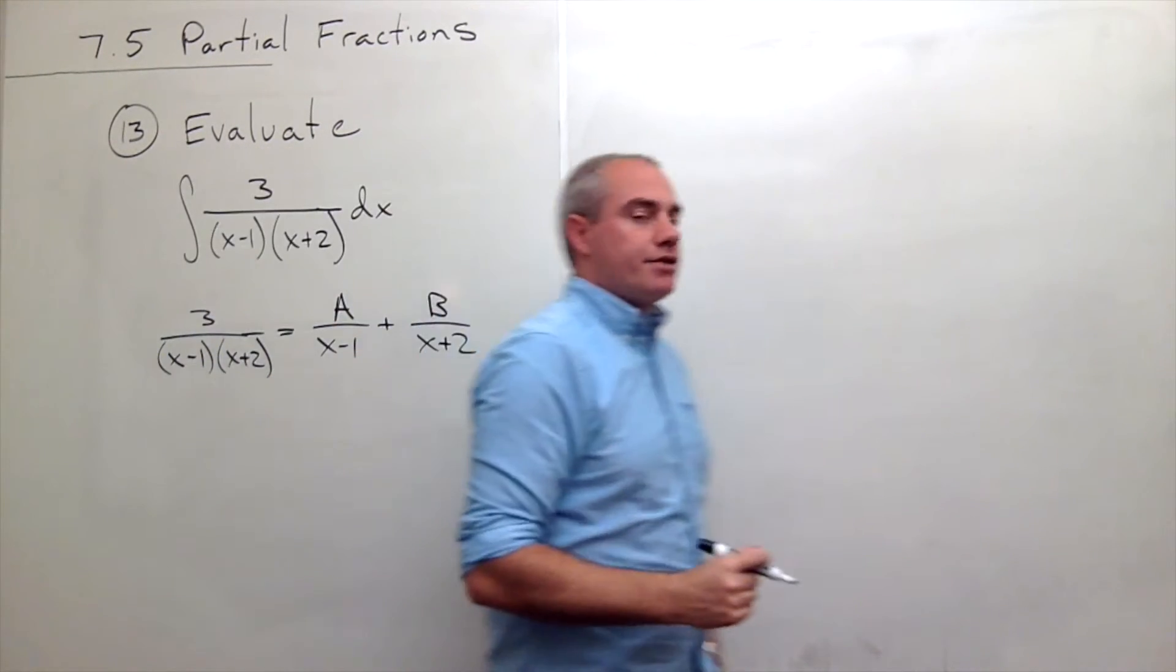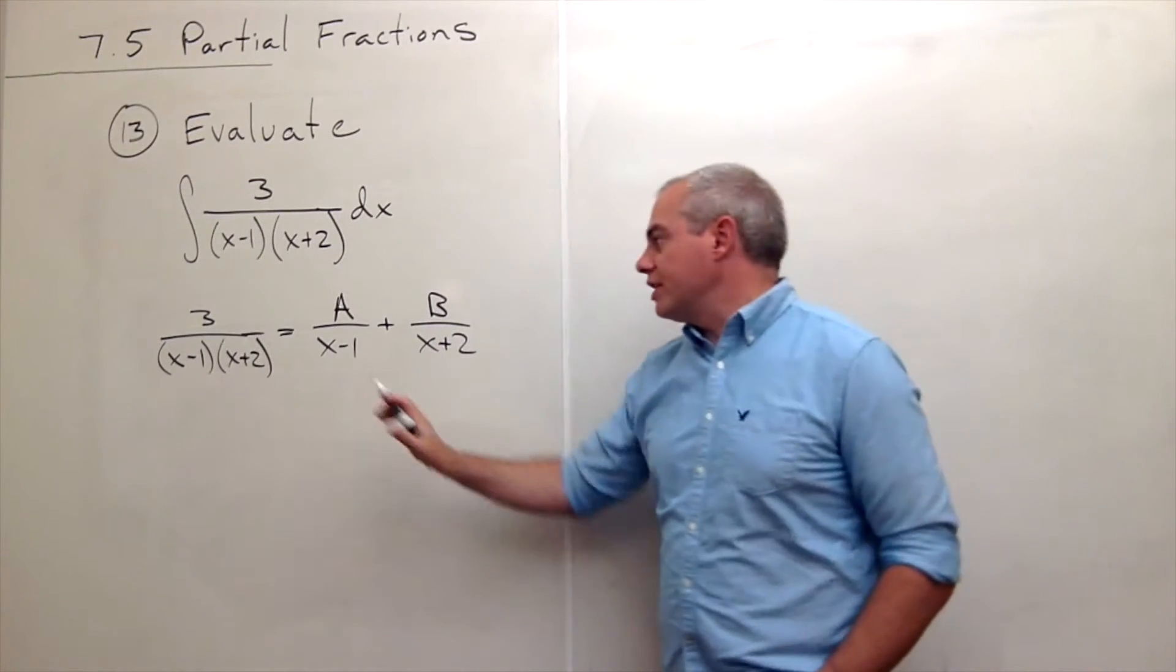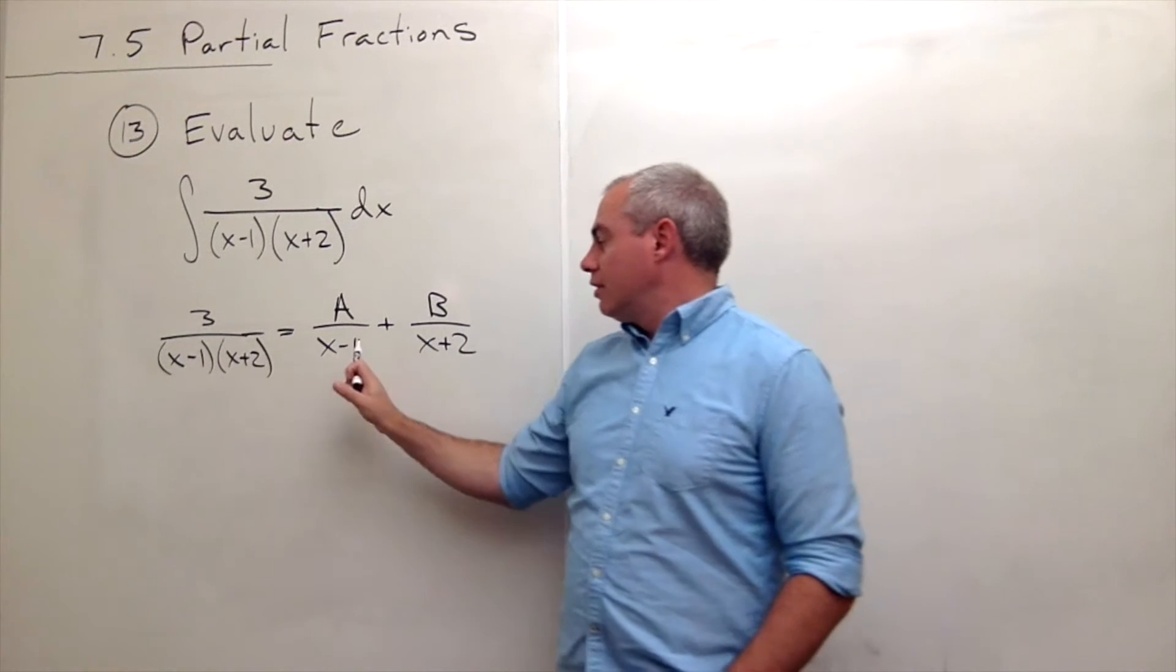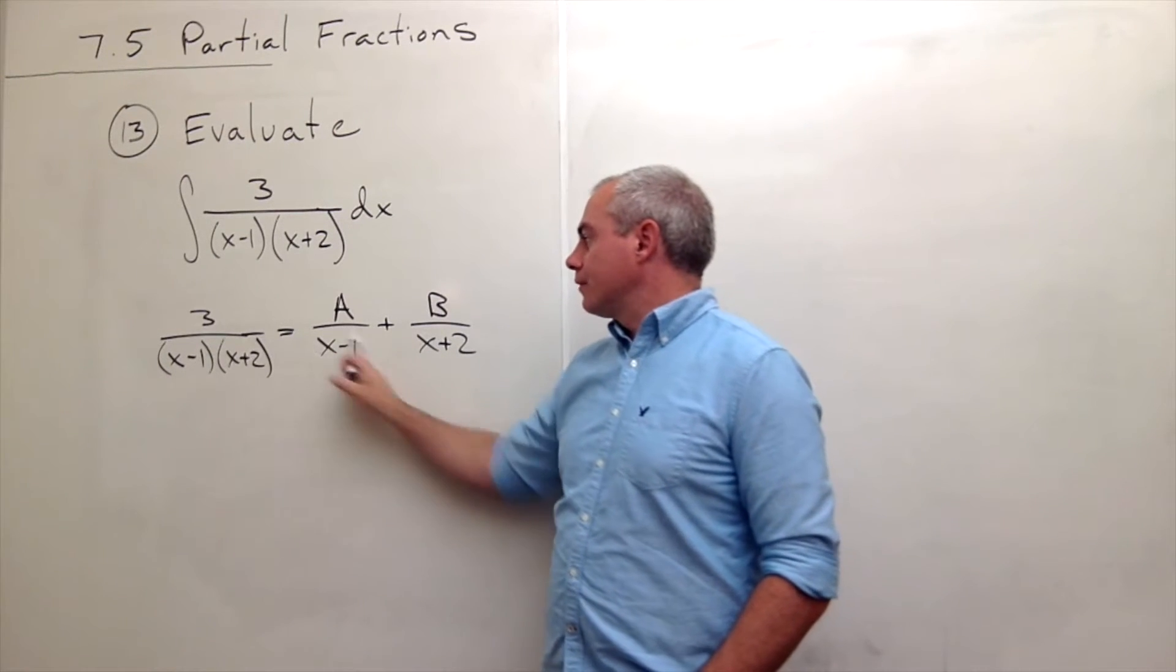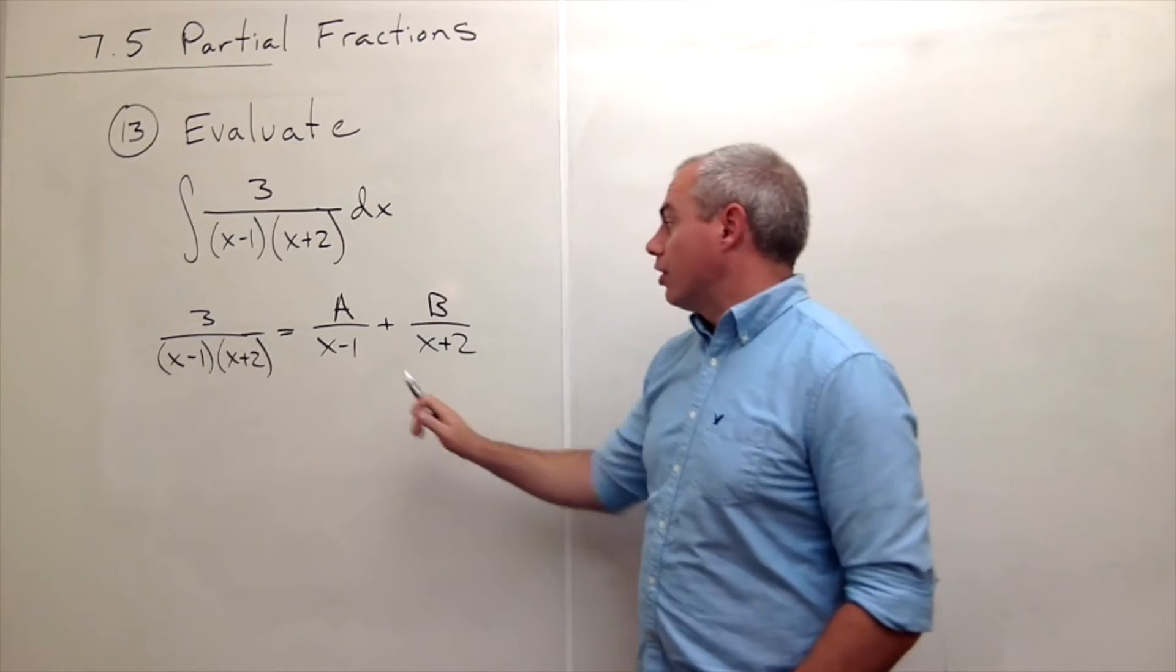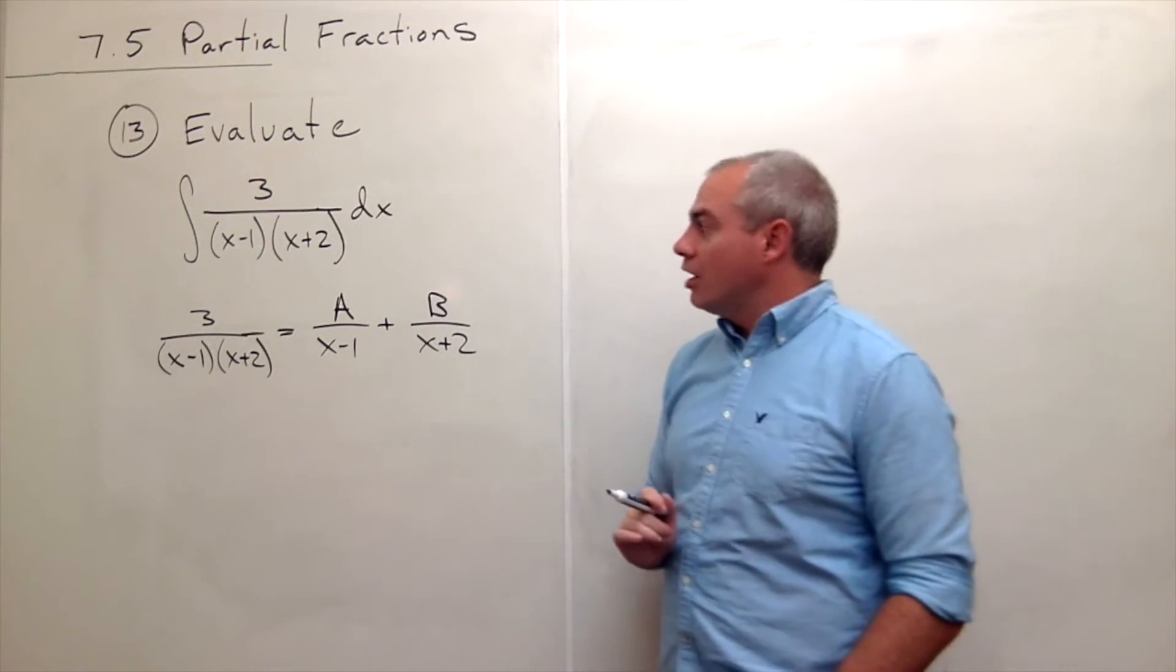Now that I've got it written out, the reason that this is an A and this is a B is both of the denominators are linear factors, so we just get an x minus 1 and an x plus 2 on the bottom.